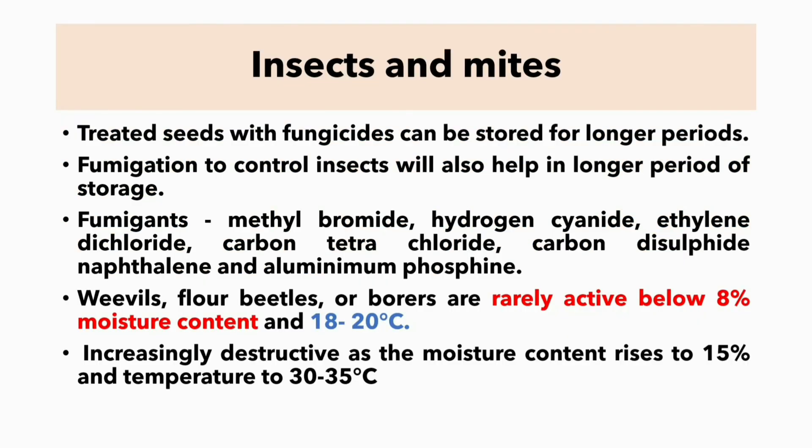The last post-harvest factor affecting seed viability is insects and mites. The activity of these organisms can lead to damage resulting in loss of viability. Seeds treated with fungicides can be stored for longer periods. Fumigation to control insects also helps in longer storage. Fumigants used include methyl bromide, hydrogen cyanide, and ethylene dichloride. Weevils and flour beetles are rarely active below eight percent moisture content and 18 to 20 degrees Celsius, but are increasingly destructive as moisture rises to 15 percent and temperature to 30 to 35 degrees Celsius.